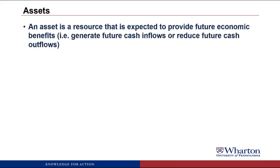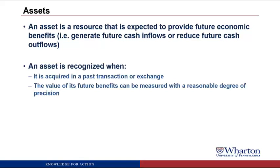An asset is a resource that's expected to provide future economic benefits. That means it's either going to generate cash in the future or it's going to reduce the amount of cash we have to pay in the future. There are two criteria we're going to use to decide when we can recognize an asset: it has to be acquired in a past transaction or exchange, and the value of its future benefits can be measured with a reasonable degree of precision.